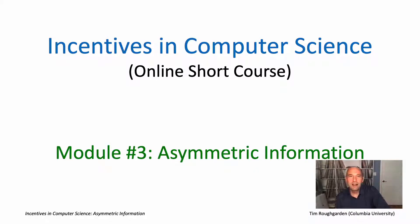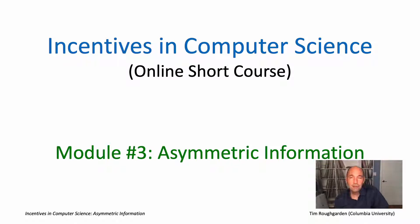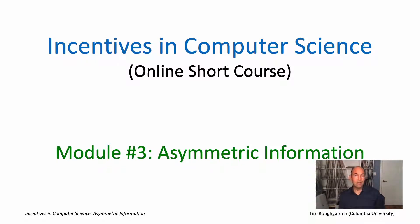Hi everyone, and welcome back to this online short course on incentives in computer science. This is going to be module number three. We're going to be talking about asymmetric information, specifically about adverse selection, moral hazard, and the implications of those topics to the design of reputation systems.